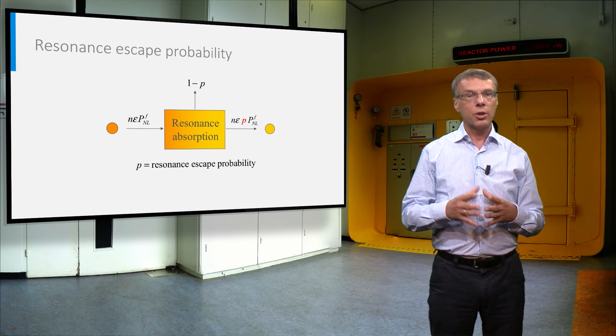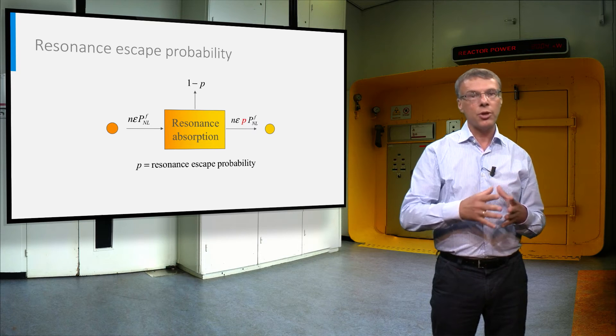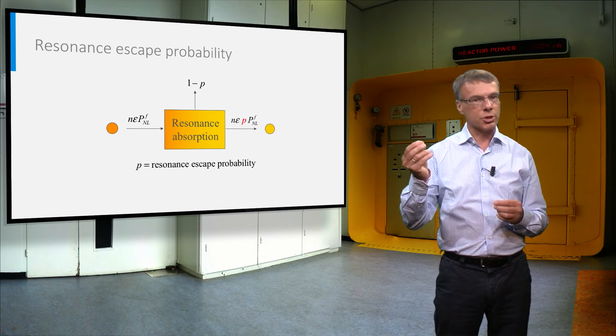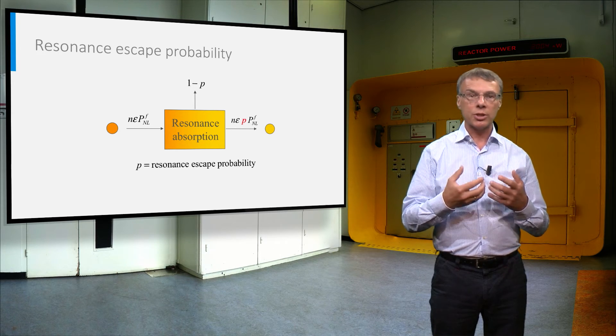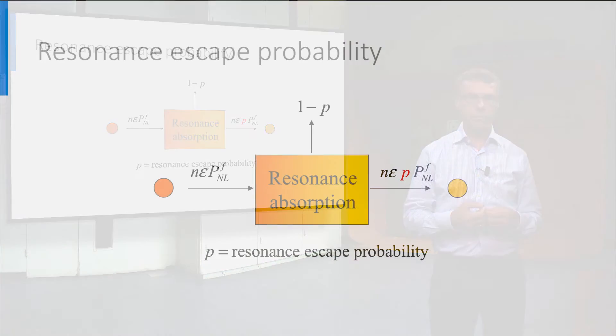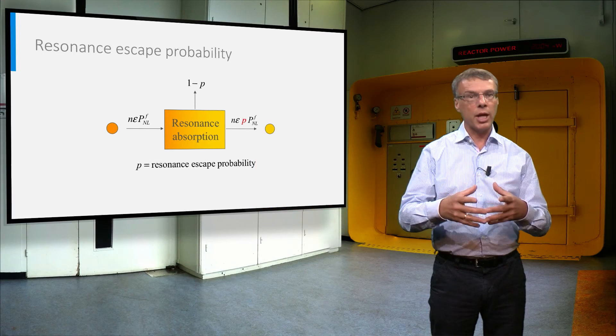As mentioned before, the neutrons that slow down have to cross the resonance region of the uranium-238 in the fuel. A certain fraction of the neutrons will be captured, while a fraction p, called the resonance escape probability, will survive the resonance range. The number of neutrons indicated on the right-hand side of the square have survived the resonances and will reach the thermal energy range.